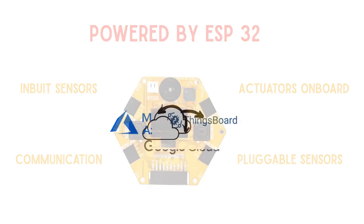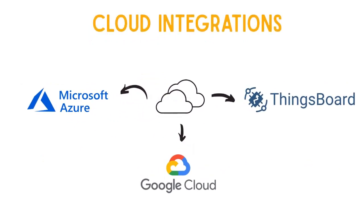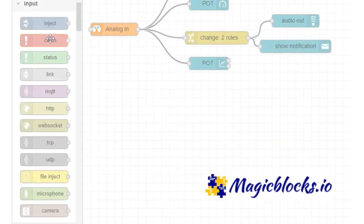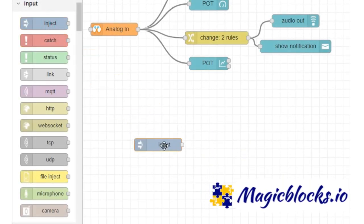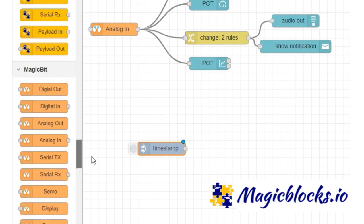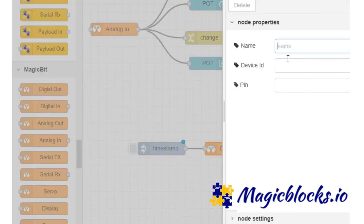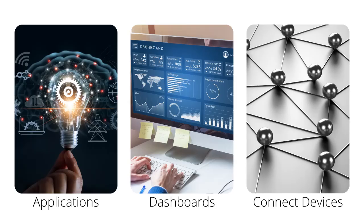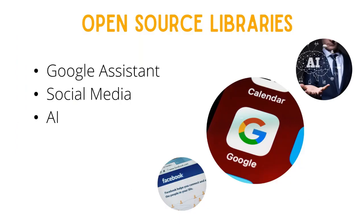It can be readily connected to cloud applications like Azure, Google Cloud, ThingsBoard, and MagicBlocks. MagicBlocks is our easy-to-use IoT platform powered by Node-RED, which supports making applications, web and mobile-compatible dashboards, and connected devices in minutes. It also has many open-source libraries like Google Assistant, Social Media Integrations, AI, and many more.